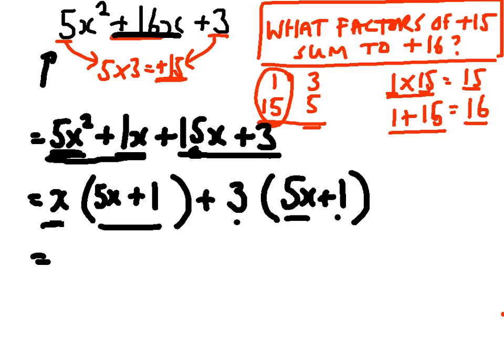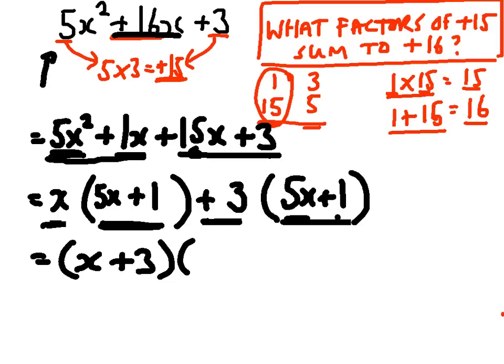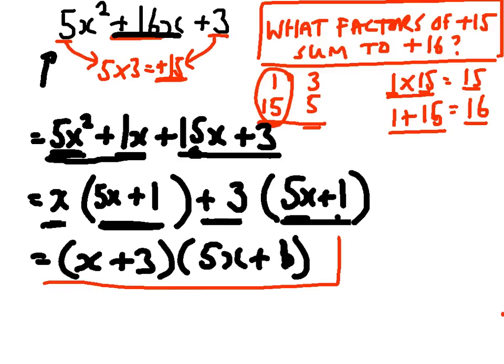So that's the next line. And then finally, I've got x here and I've got 3 here. So we'll write x. They're both positive, x plus 3. And they are both multiplied by 5x plus 1. So 5x plus 1 is my other factor. So that's my answer, x plus 3 times 5x plus 1.